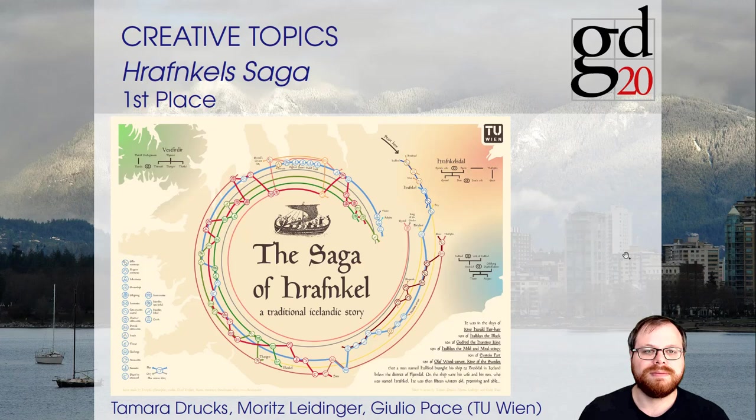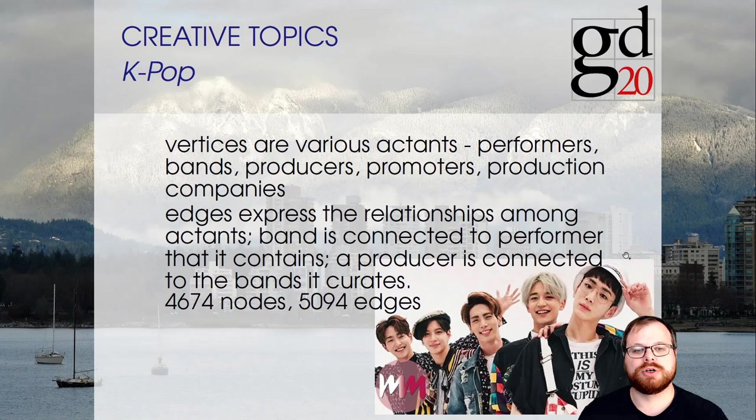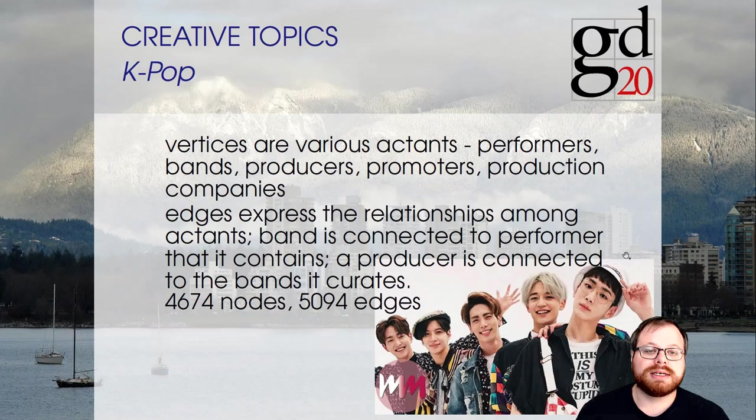In the second creative topic, we gave you the K-pop graph. The vertices are various actants — performers, bands, producers, promoters, and production companies — and the edges are relationships between them. This was a very large graph with 4,674 nodes and 5,094 edges. We received four submissions for this category.